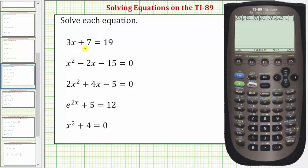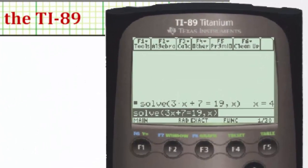So to solve the equation 3x + 7 = 19, we'll press F2. Notice how solve is the first option, so we can press one or enter. I'm going to press enter, enter the equation 3x + 7 = 19. We want to solve for the variable x, so we enter comma x, close parenthesis, and enter. The solution is x equals 4.